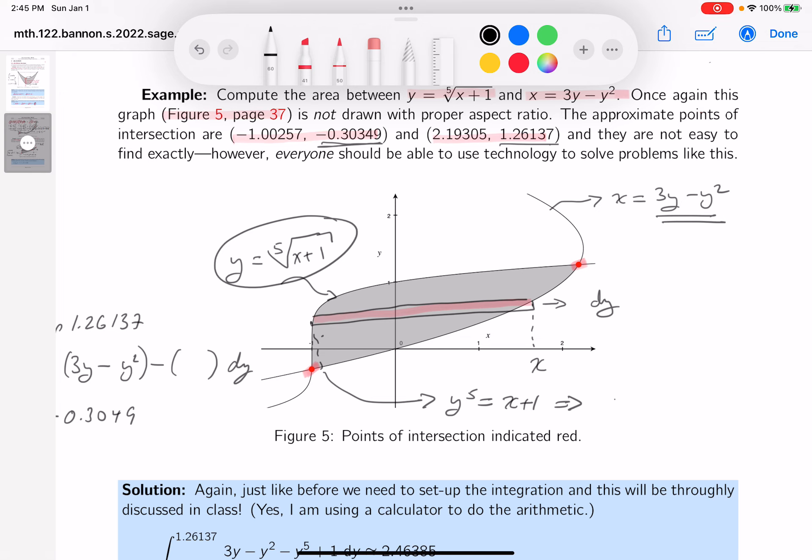This would be y to the fifth power. I want to get the x, and that would be x plus 1. Kind of going forward on it, really not that bad. What would x equal? x would equal y to the fifth minus 1. So write that down.